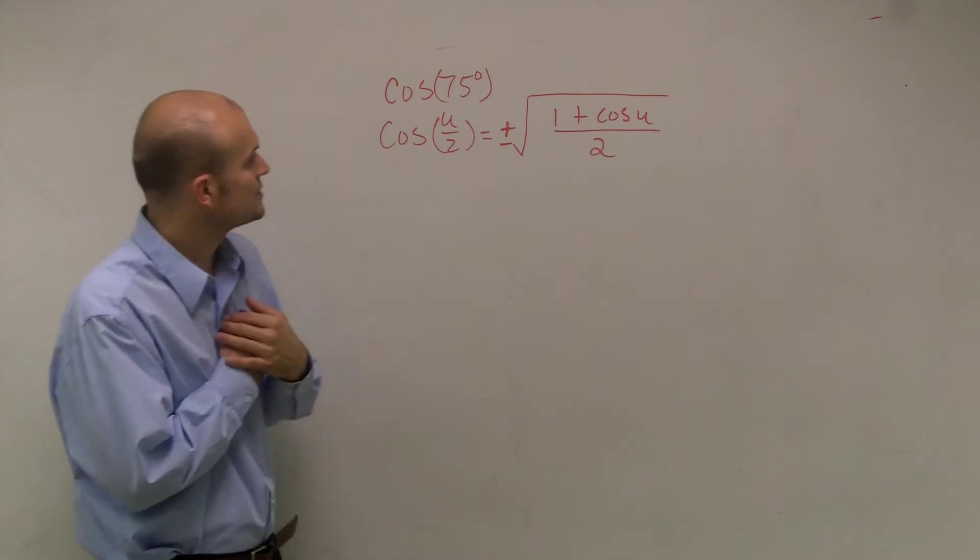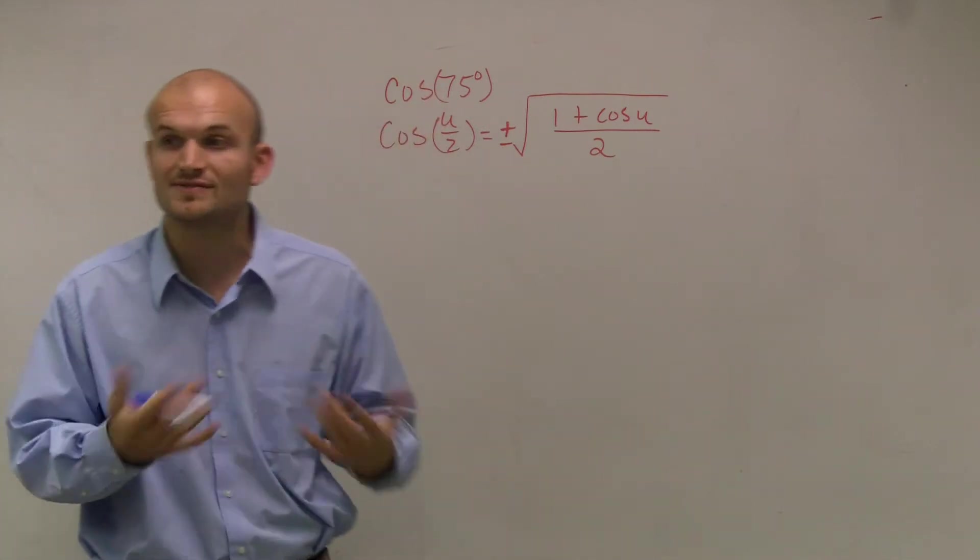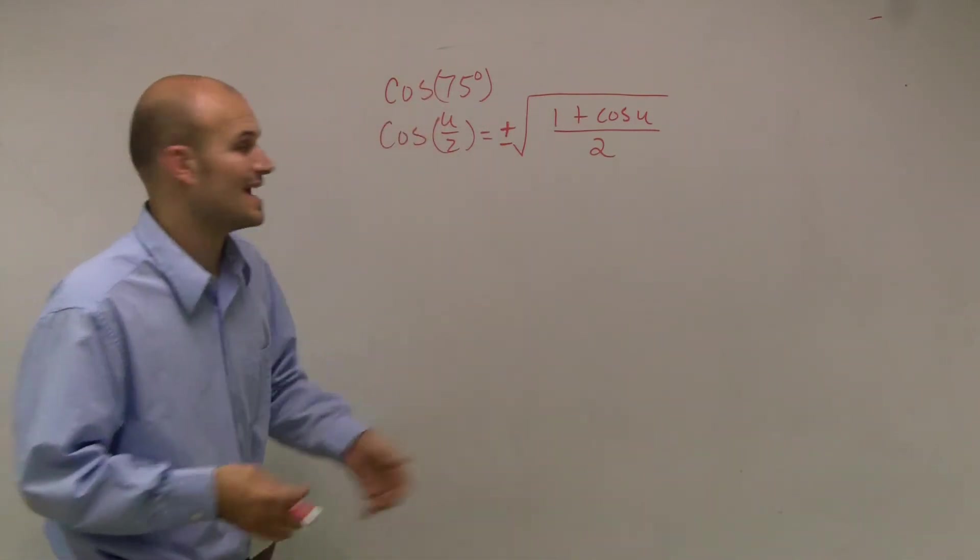OK, for this problem, what we need to do is evaluate the cosine of 75 degrees. We're going to evaluate using a half-angle formula.